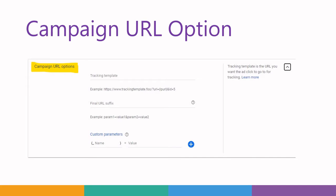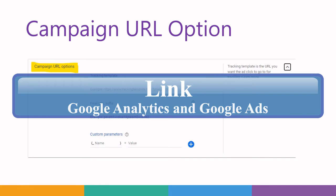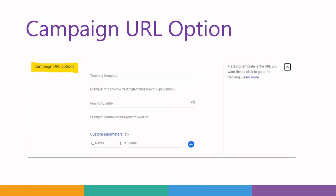Before setting up the campaign URL option, first you have to link your Analytics account to Google Ads. If you are using a Google Analytics account to track, then you have to combine the Google Analytics account with your Google Ads, and then you have to set the tracking template.